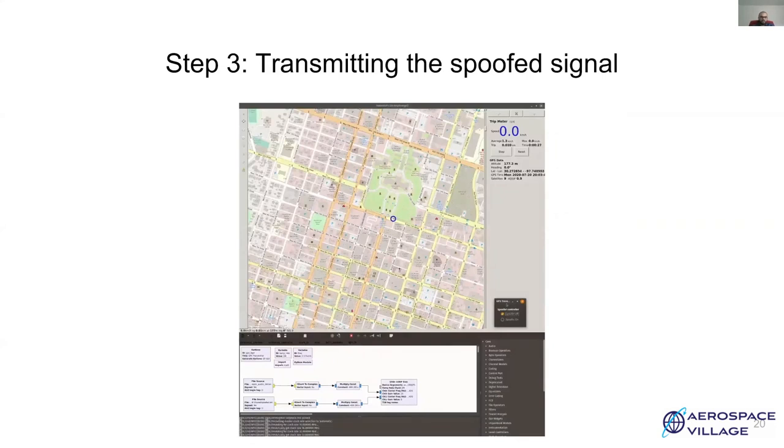In step two, we generated a GPS baseband signal. In step three, we will be using a software defined radio to transmit this signal. We have a simple GNU radio flow graph for transmission. This flow graph reads samples from a file source, converts it into GR complex and sends the samples to a USRP sync. In this case, I'm using a USRP B210 for transmission. It supports transmission on two channels. The first channel transmits the legitimate signal and second channel transmits a spoofing signal. This sync can be replaced by a software defined radio of your choice. The only requirement is that it should be able to transmit at two mega samples on 1.57 gigahertz.